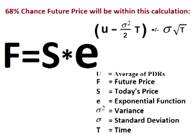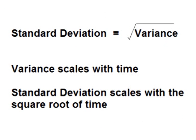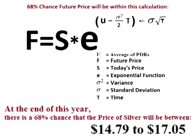The empirical formula tells us that the actual rate of return has a two-thirds chance of falling within one standard deviation of the expected future rate of return, and a 95% chance of falling within two standard deviations of the future rate of return. Therefore, we can use the standard deviation and the empirical formula to create a probability or odds range around the expected future price. To do this, we take the daily standard deviation and scale it at the rate of the square root of time — in other words, we multiply the standard deviation by the square root of 29, because there are 29 trading days left this year. Calculating out the expected path of price plus or minus one standard deviation gives us a range of $14.79 to $17.05. This means that there is roughly a two-thirds chance that the price of silver will be within $14.79 to $17.05 at the end of this year.